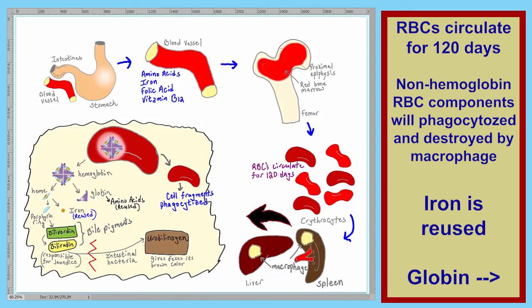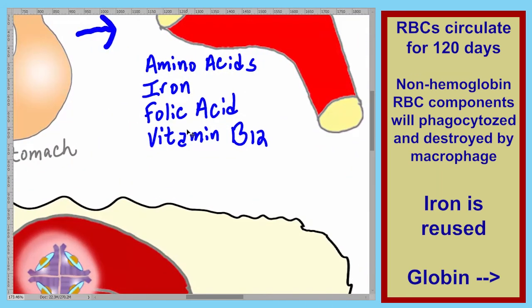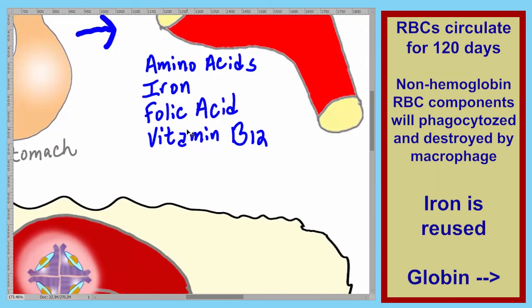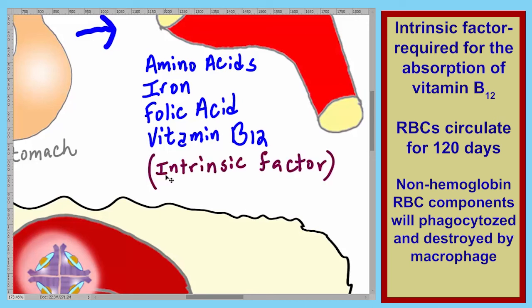Before leaving the red blood cell life cycle, I'd like to make three additional observations. The first deals with vitamin B12. In order for vitamin B12 to be absorbed into circulation across the intestines, we need a special substance — and this substance is intrinsic factor. Intrinsic factor is a substance that's needed for the absorption of vitamin B12.